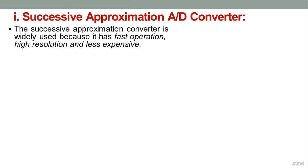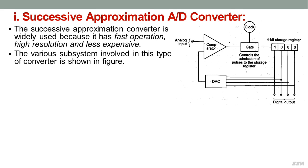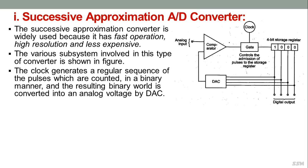The successive approximation converter is widely used because it offers fast operation, high resolution, and is less expensive. Its subsystems include a comparator whose output is given to a control gate, which feeds a register or counter. The parallel output lines of the counter connect to a digital to analog converter, whose output feeds one input of the comparator. The other comparator input receives the analog input signal, and the gate is controlled by a clock.